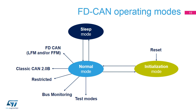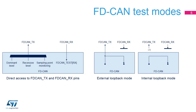To enable write access to the FDCAN test register, bit TEST in the CCCR register must be set to 1, thus enabling the configuration of test modes and functions. In test mode, software can control the state of the FDCAN TX pin and can read the state of FDCAN RX. Through the FDCAN test register, software can control the FDCAN TX output: force dominant level, force recessive level, or monitor the sample point. The actual value at pin FDCAN RX can be read from the RX bit in the FDCAN test register. Both functions can be used to check the CAN bus physical layer.